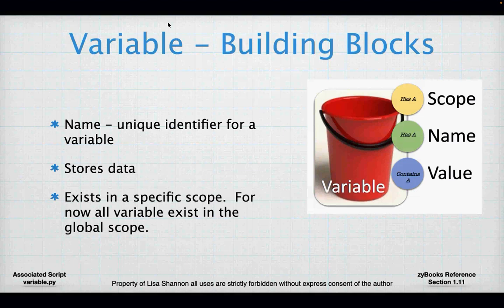So I create a variable and store it in a memory space, and I tell Python the name of that memory space. Every variable has a name, it stores data, and it exists in a specific scope. For right now, all we're going to talk about is the global scope. In week three we'll begin to talk about different scopes like the local scope. I just want to introduce the concept and the word scope — as time goes on we will become more familiar with what scope is.